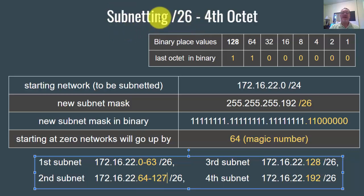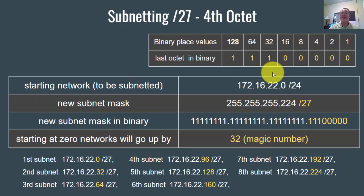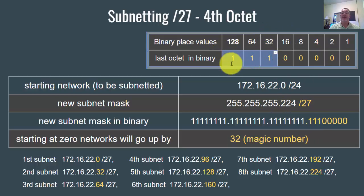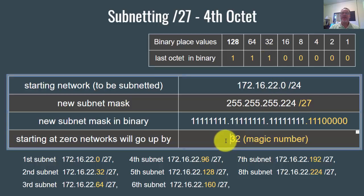That's subnetting with a slash 26 subnet mask. If we look at slash 27, it's a similar process. Using the same network address, if we subnet with slash 27 instead of slash 26, the subnet mask becomes 255.255.255.224 because we have 27 ones in binary — that's 128 plus 64 plus 32 in the last octet. So instead of 255.255.255.0, we have 255.255.255.224, and the last one is in the 32s place.